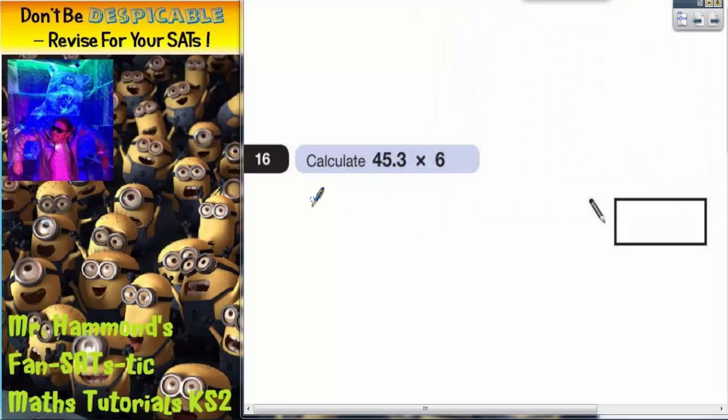Question 16: Calculate 45.3 times by 6. As long as you set this out in a column method, you will have no trouble whatsoever and this will be easy marks. So remember, in your answer your decimal point lines up.